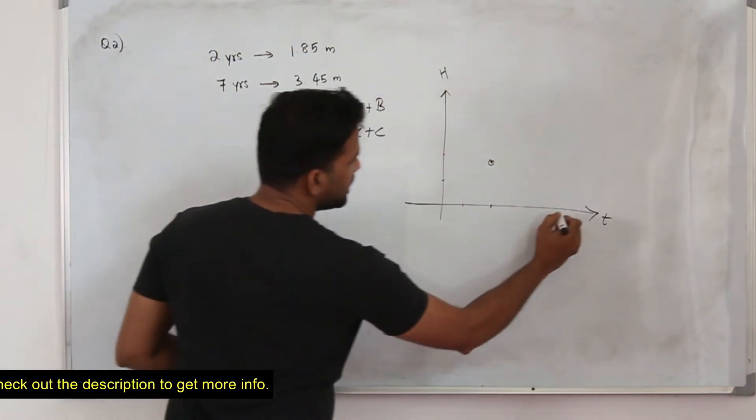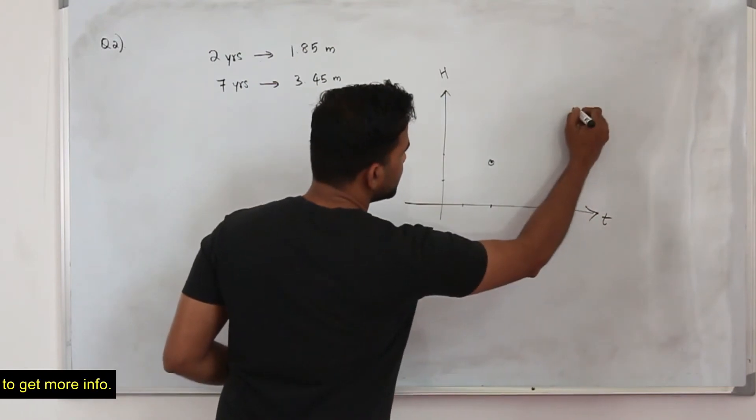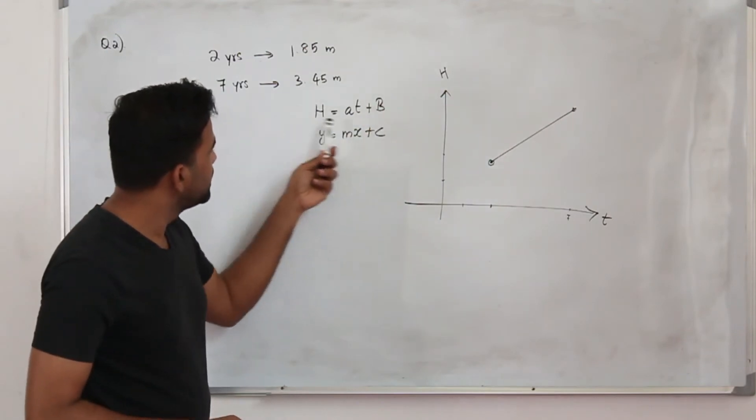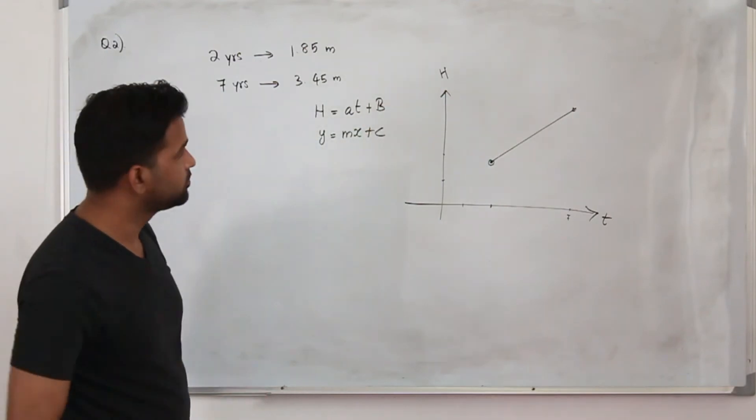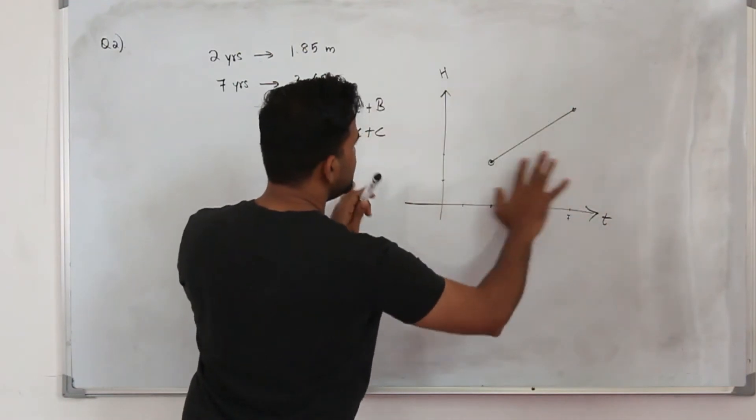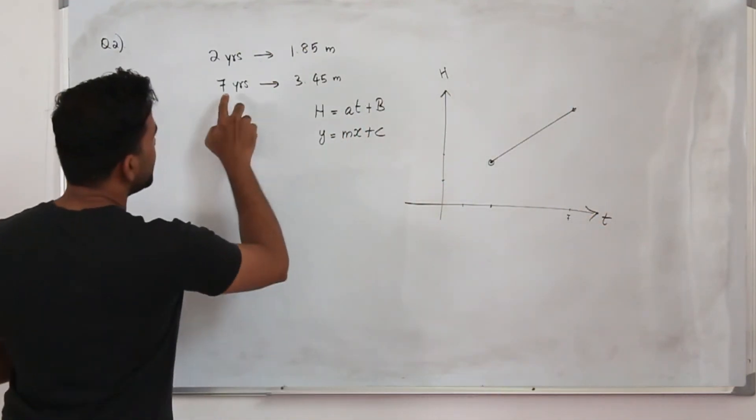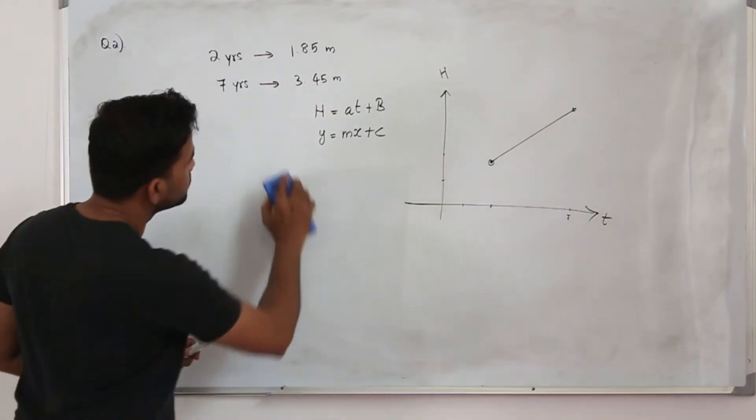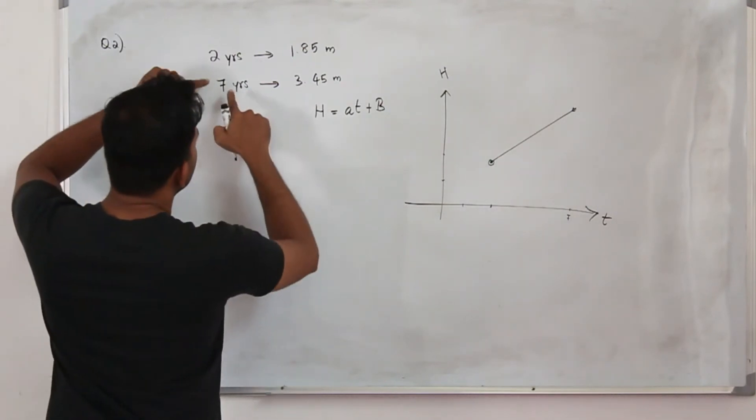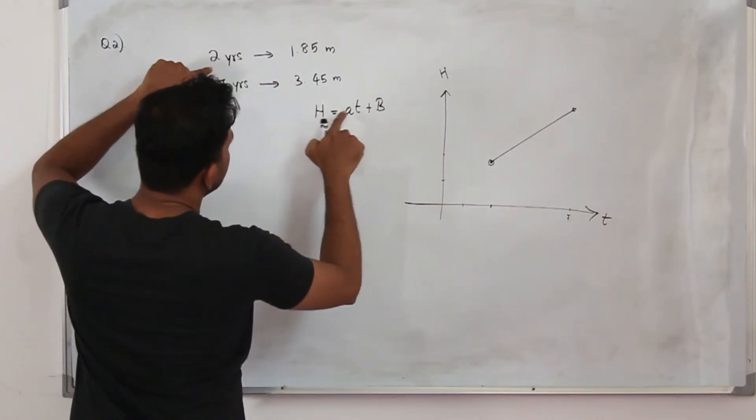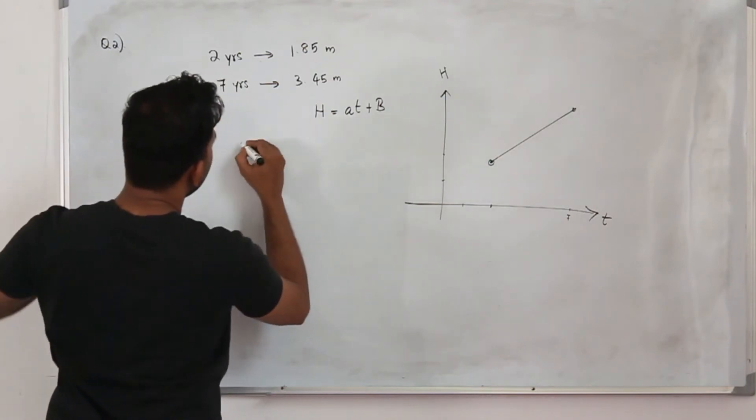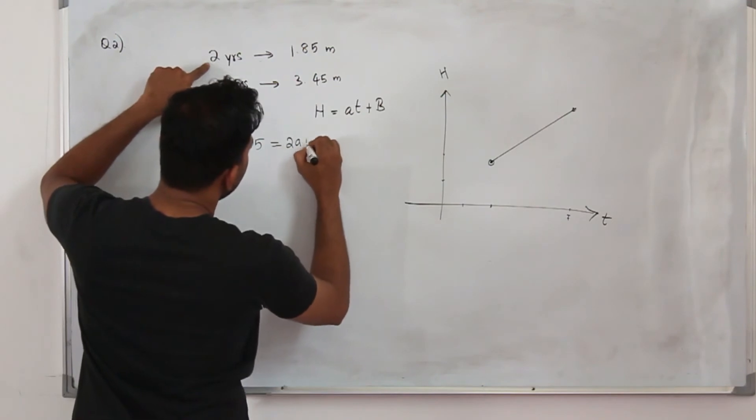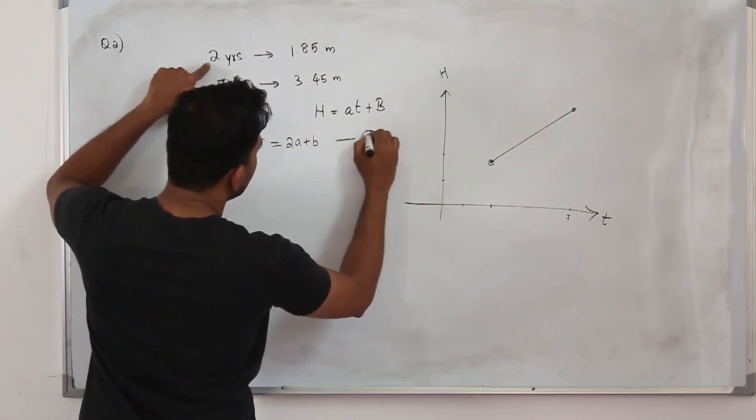If you connect this as a straight line, that's why the equation looks like a straight line equation, but you don't need to sketch this. You can straight away substitute the values here. Replace H by the height 1.85 equals t is 2, so 2a plus b, that's equation one.